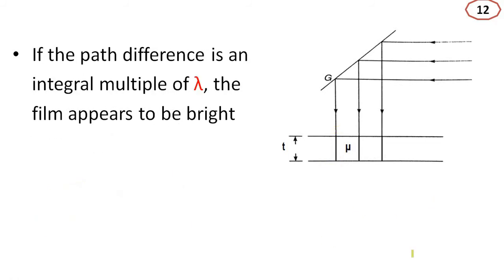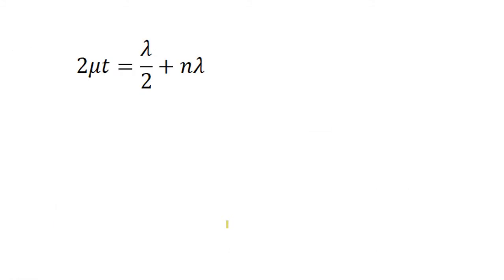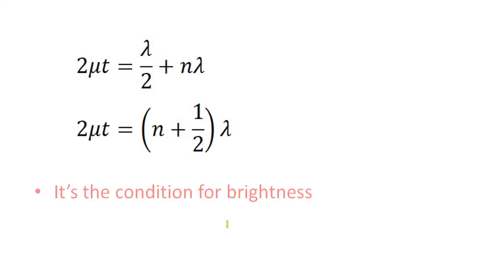We have already discussed the condition for brightness — the path difference should be an integral multiple of wavelength lambda. When delta equals n lambda, the film appears bright. Substituting: 2 mu t minus lambda by 2 equals n lambda, which gives 2 mu t equals n lambda plus lambda by 2. We can write this as 2 mu t equals (n plus one-half) lambda. This is the condition for brightness.